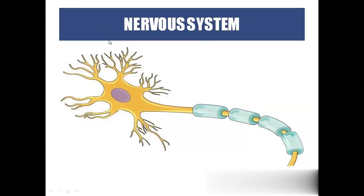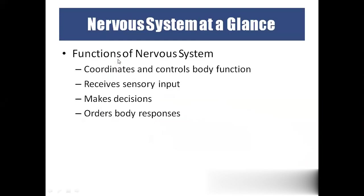Today our topic is about the nervous system. Coming to the functions of the nervous system — the nervous system is a very important system in our body. The whole controlling mechanism of our body lies in only two systems: one is the nervous system and the other is the hormonal or endocrine system. The nervous system will control our body with electrical stimuli, and the endocrine system will control our body through hormones. These two separate systems control our body, but the way of controlling is different.